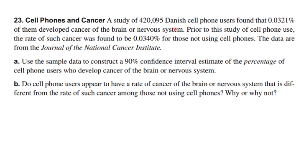Use the sample data to construct a 90 percent confidence interval of the percentage of cell phone users who develop cancer of the brain or nervous system. Then use that information and the information of the problem to determine: do cell phone users appear to have a rate of cancer of the brain or nervous system that is different from the rate among those not using cell phones? Explain your answer with why or why not.